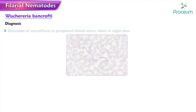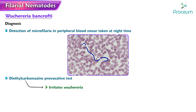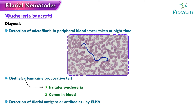Diagnosis: Detection of microfilariae on a peripheral blood smear, which is preferably taken at nighttime. Diethylcarbamazine provocative test can be done too — it irritates the worm so it appears in the blood. Detection of filarial antigens or antibodies by enzyme-linked immunosorbent assay or indirect Coombs test in patient serum. Polymerase chain reaction remains the best investigation for diagnosis.